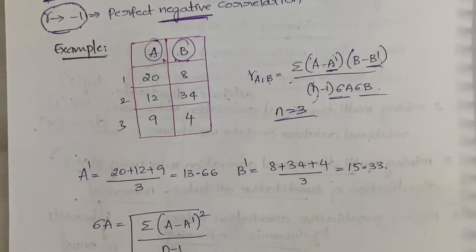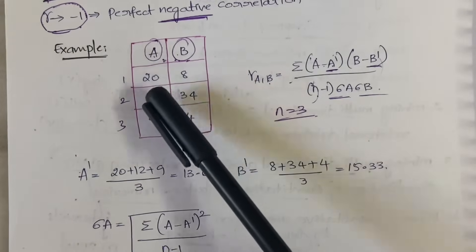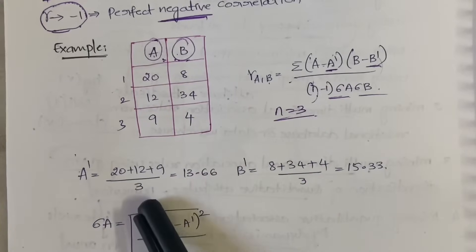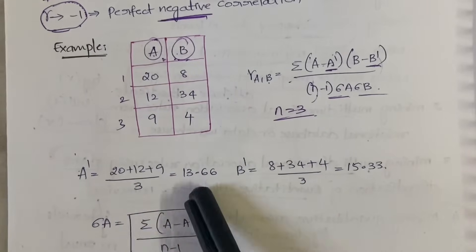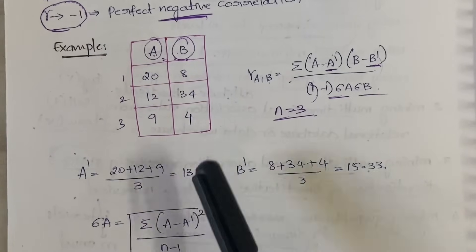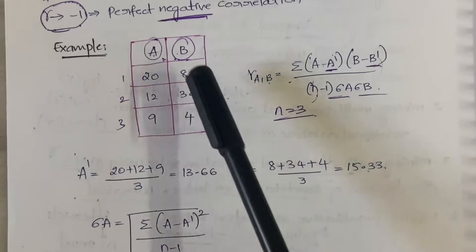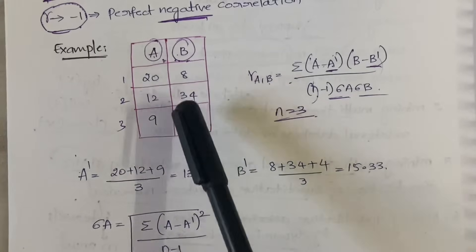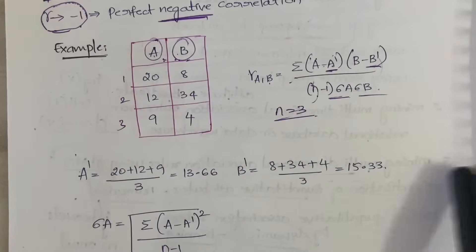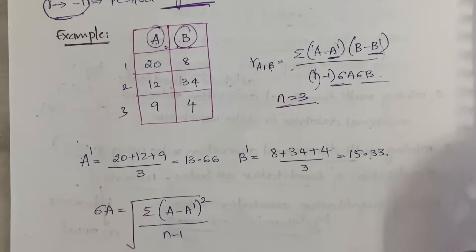A-bar is the mean of A: (20 + 12 + 9) / 3 = 13.66. Similarly, B-bar is the mean of B: (8 + 34 + 4) / 3 = 15.33.